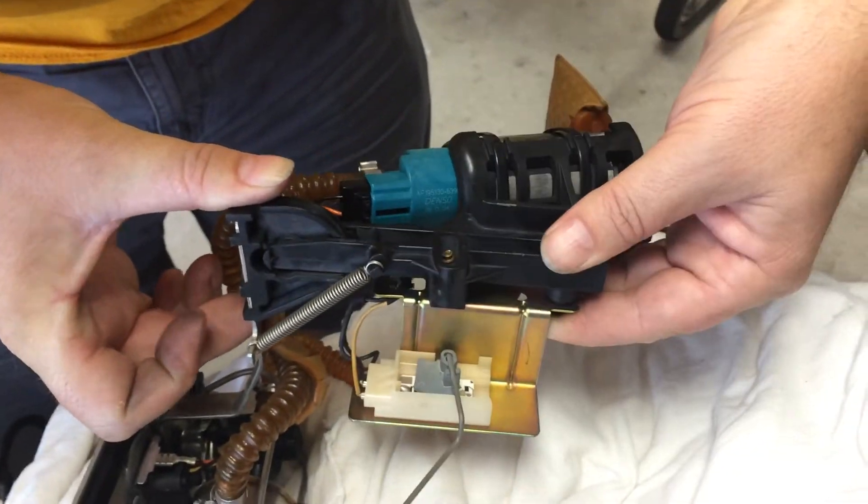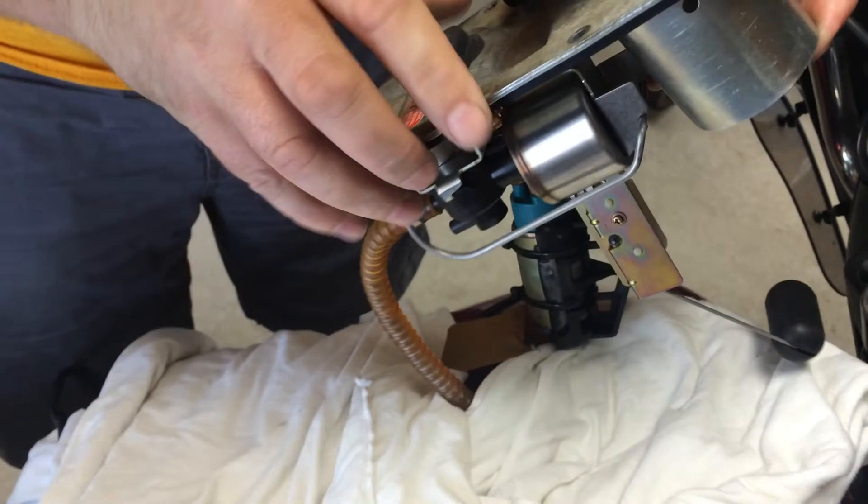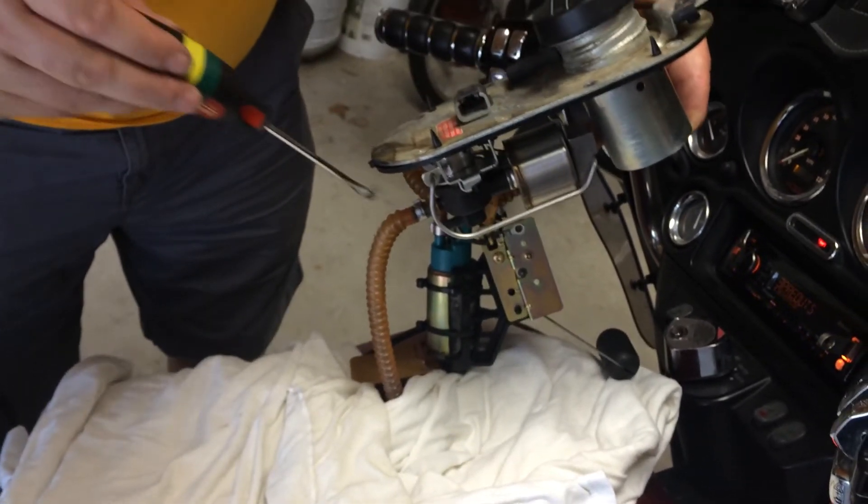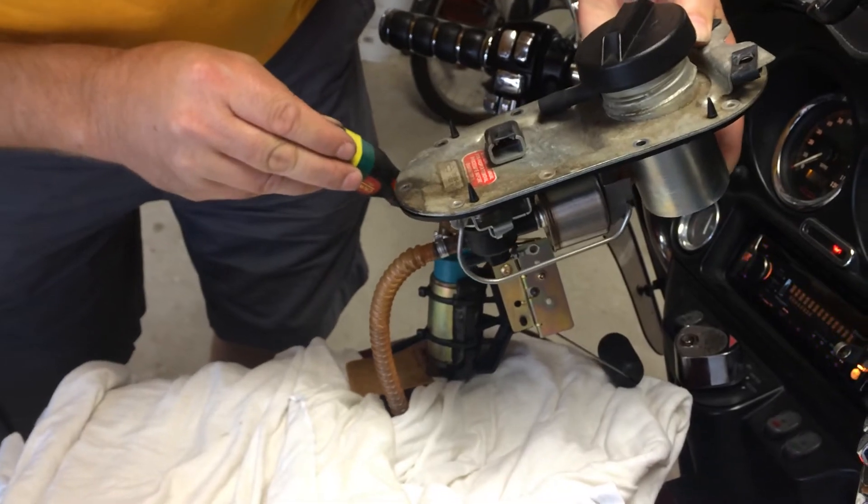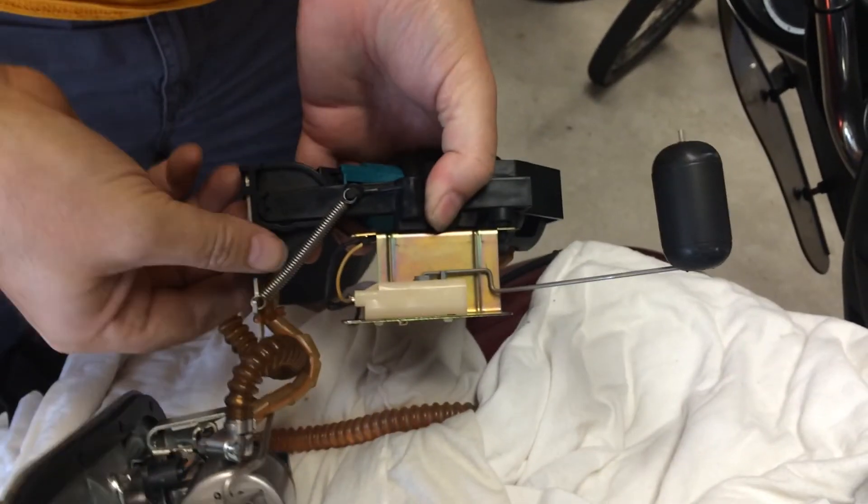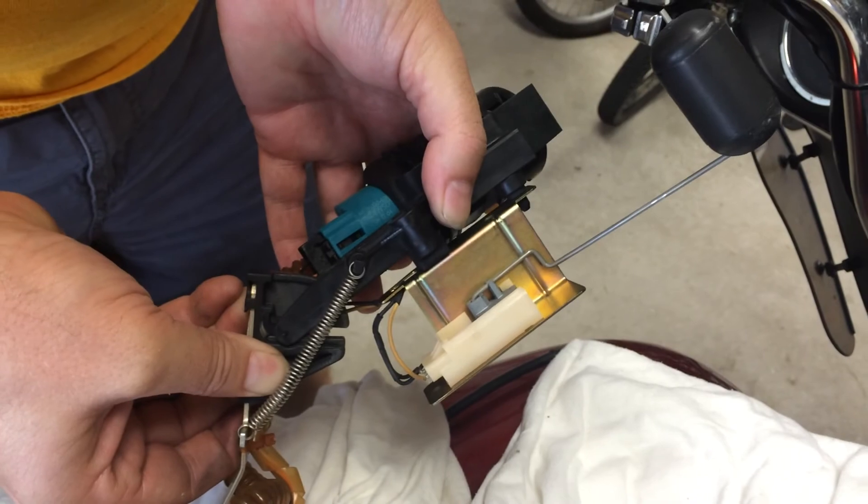When it sits in the tank, it kind of sits like this. With a screwdriver, you have to go in the tank and push right here - what you're actually doing is you're pushing this down, at which point it can swing. So that's it.